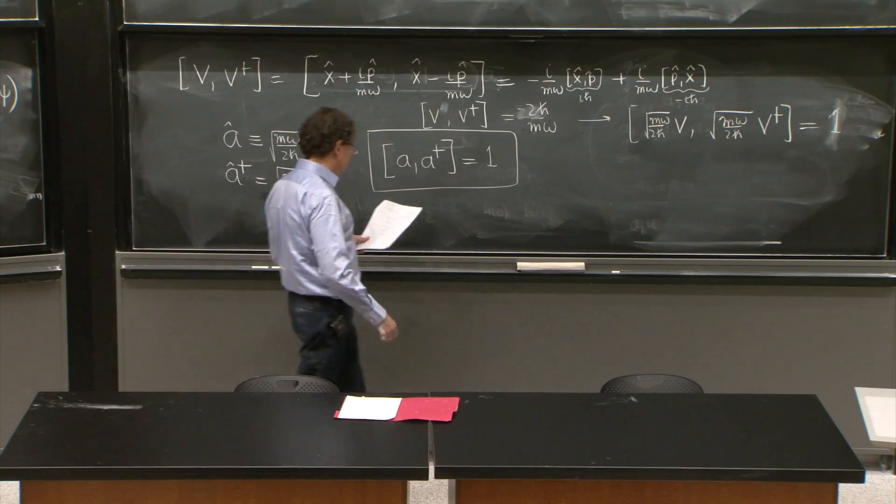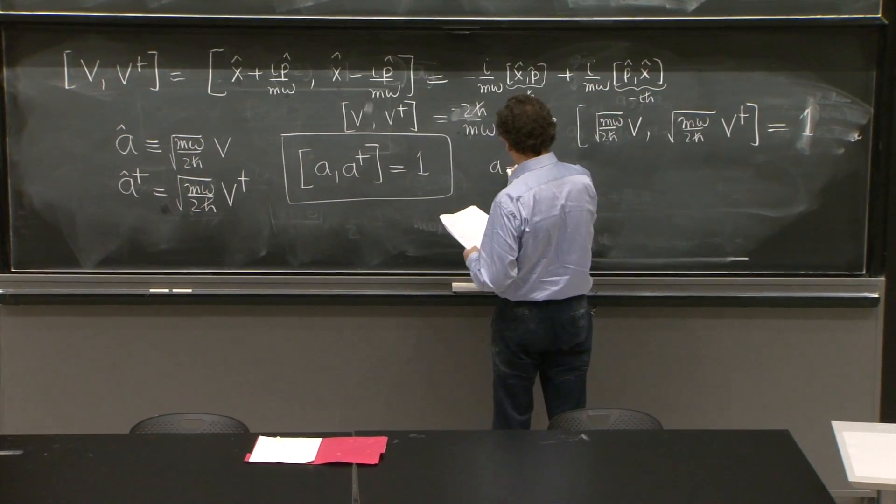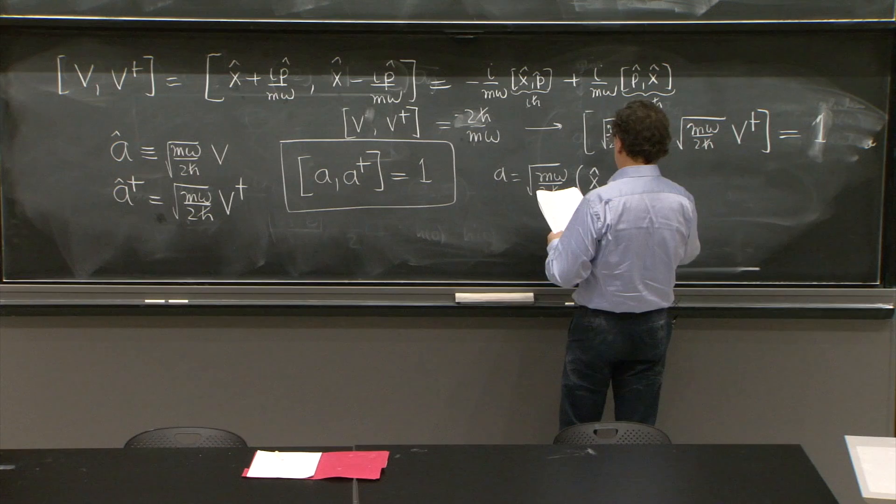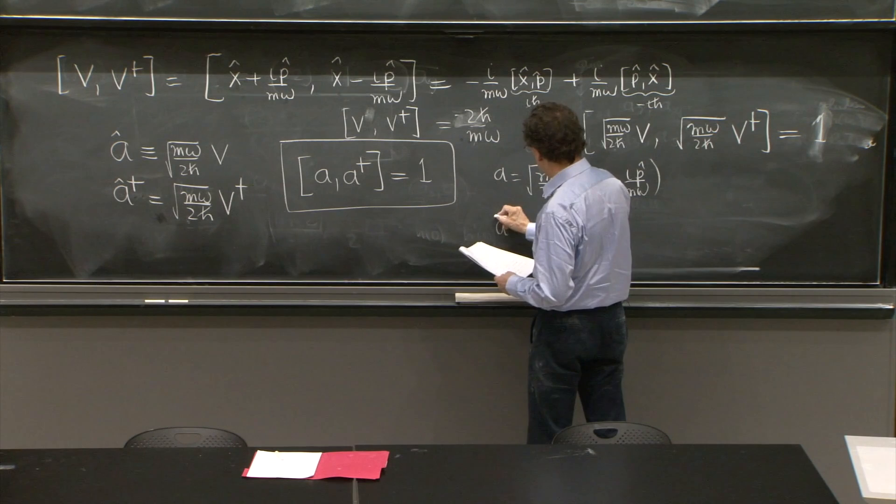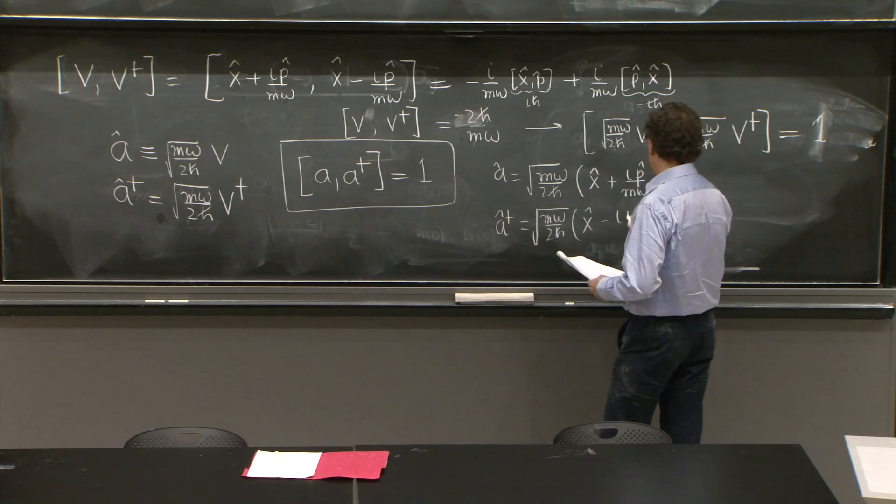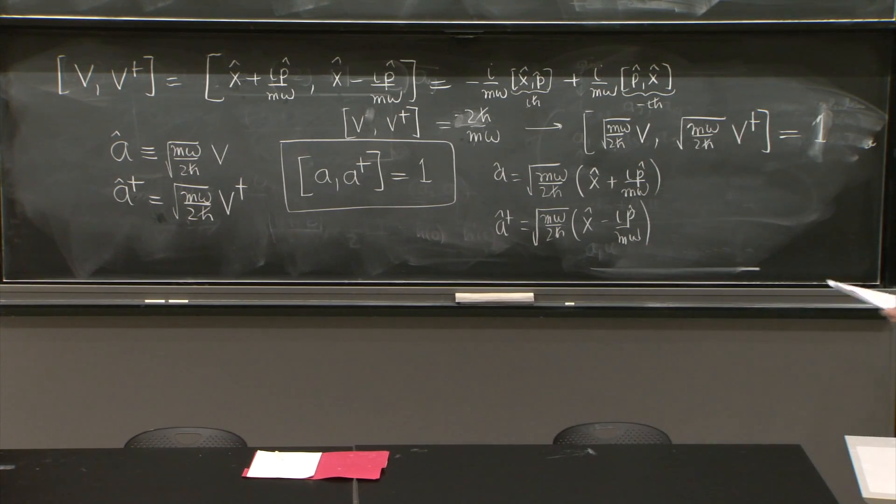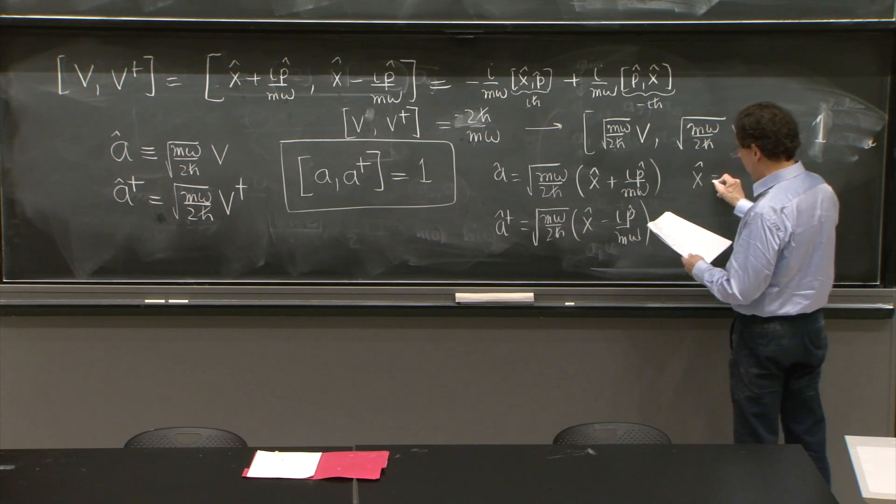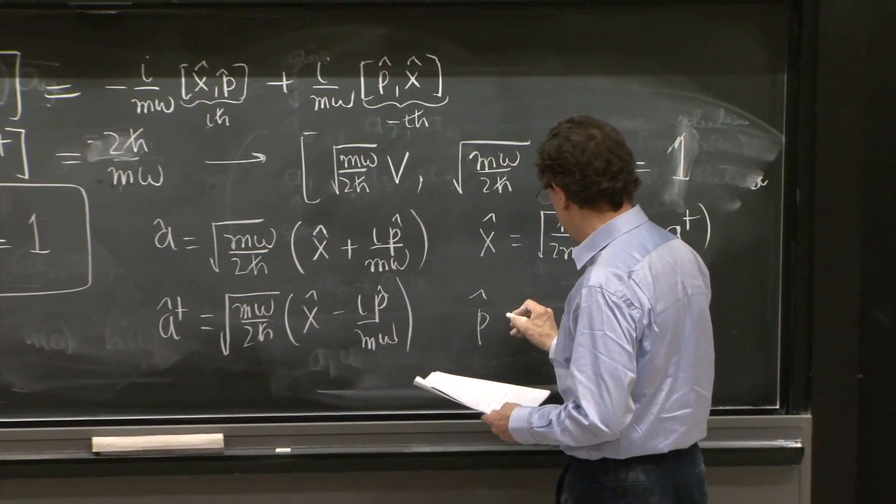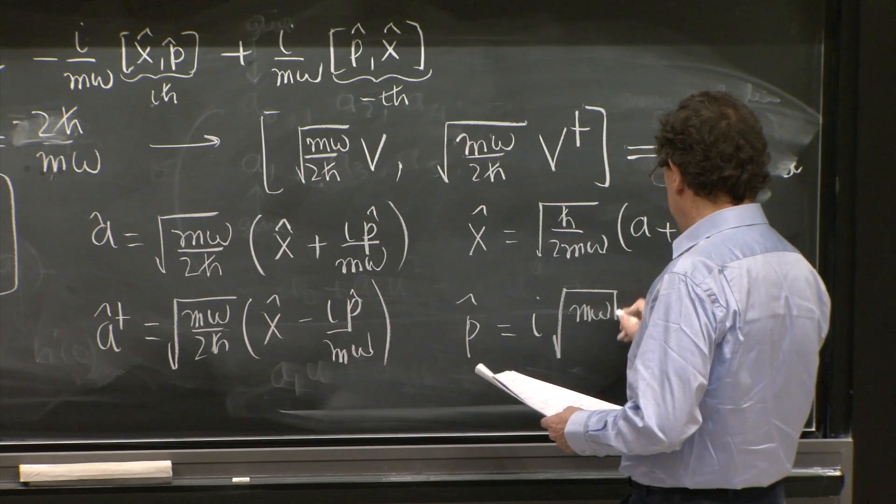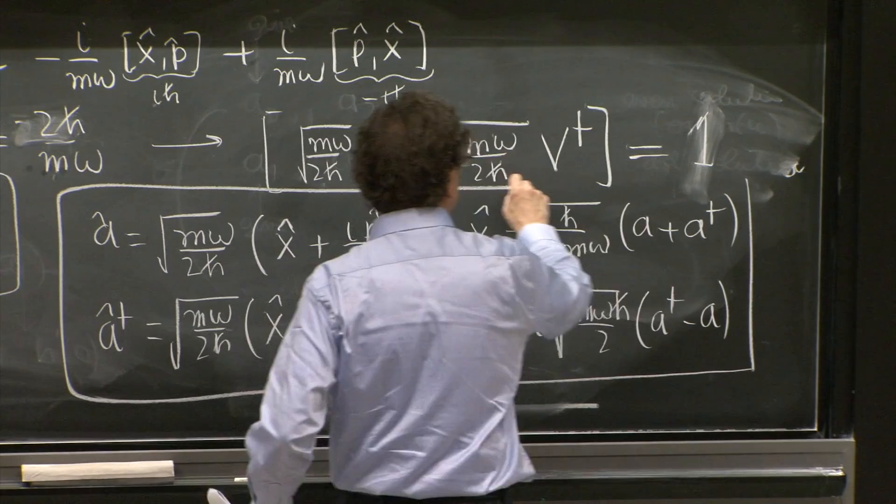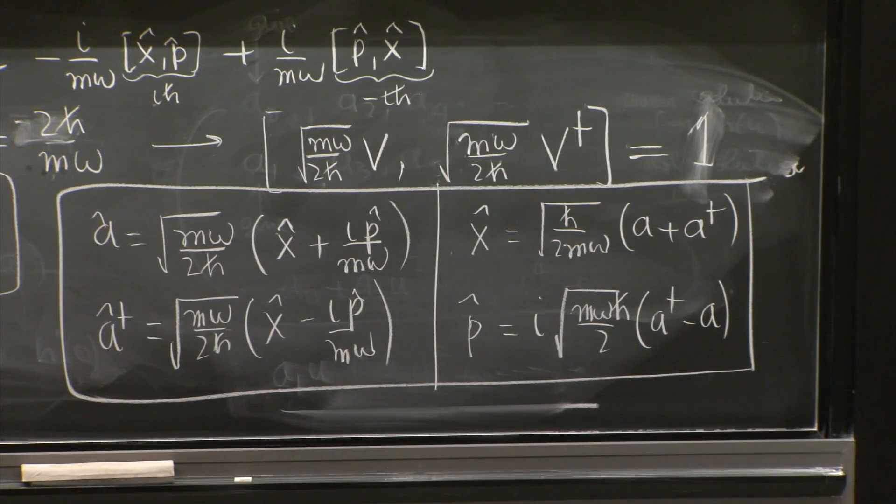I need to write the following equations. It's very, you know, it takes a little bit of writing. But they should be recorded. They will always make it to the formula sheet. And it's the basic relation between a, a dagger, and x and p. A is this. A dagger, as you know, is x minus i p hat over m omega. Since I'm copying, I better copy them right. x of the other hand is square root of h bar over 2m omega a plus a dagger. And p is equal to i square root of m omega h bar over 2 a dagger minus a. So these four equations, a and a dagger in terms of x and p and vice versa, are important. They will show up all the time.